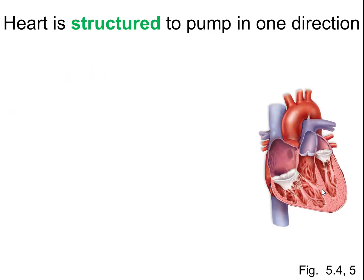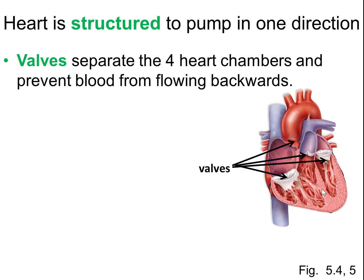The heart is structured to pump blood in one direction only. To do that, we use valves. Valves separate the four heart chambers — there are four of them. The valves work as one-way doors, like revolving doors that only go in one direction and can't go in reverse. They open up, allow blood to go in one direction, but never in reverse, preventing blood from flowing backwards. That's critical because you always want blood to move in the forward direction.